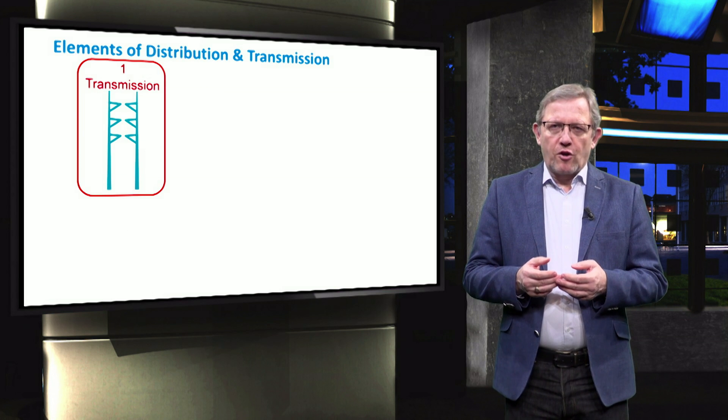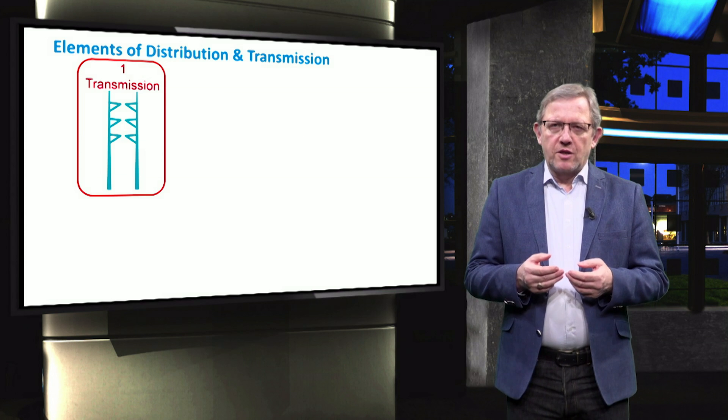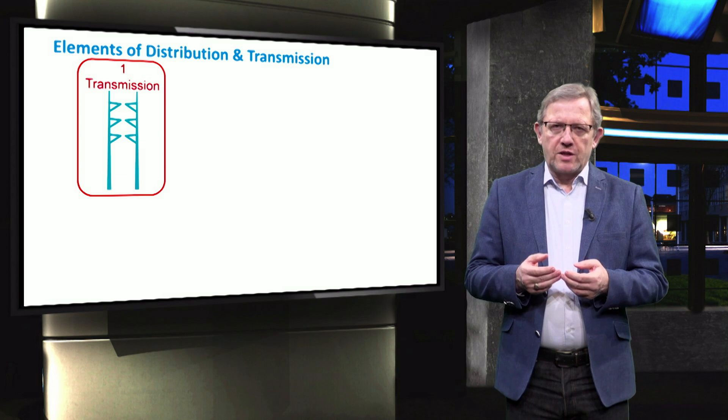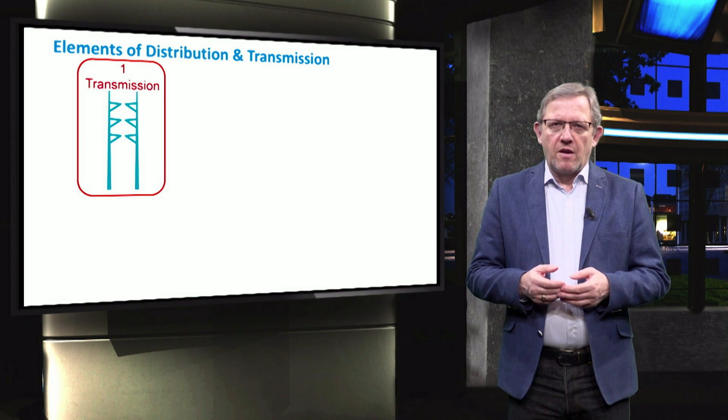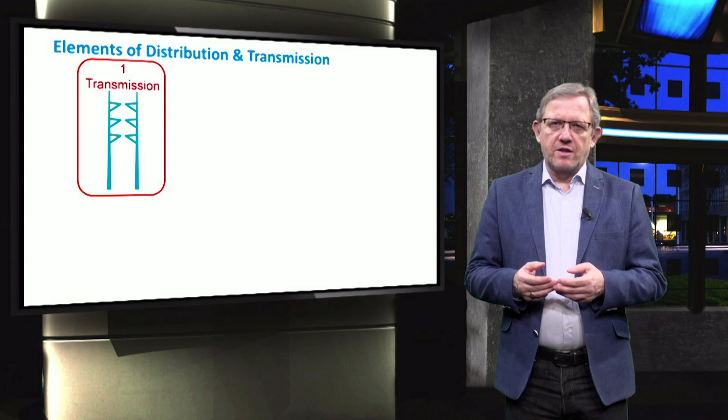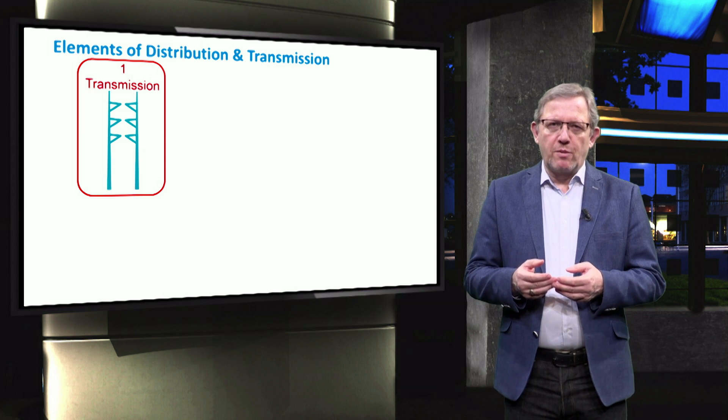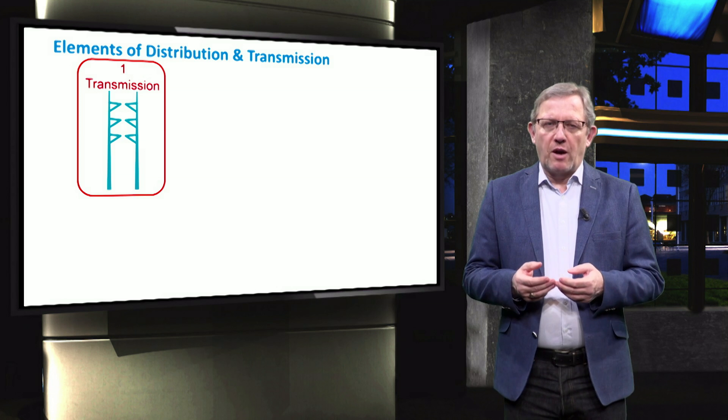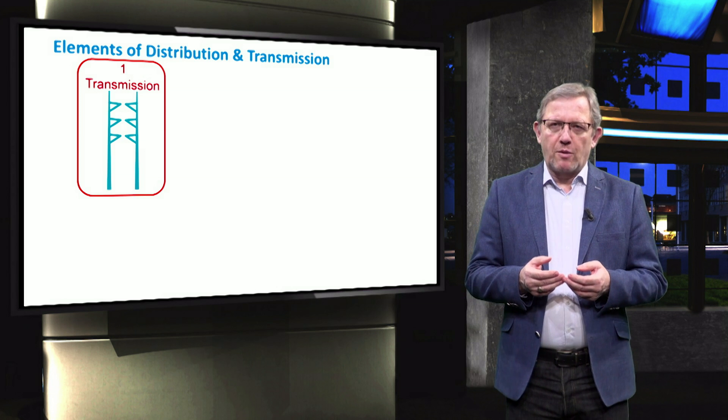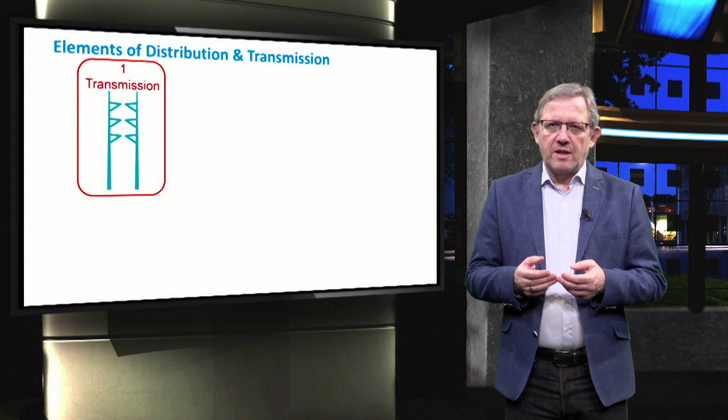Although microgrids are formed at the distribution level, it is good to look at the complete chain of the transmission and distribution. First, at the higher voltage levels, transmission is mainly responsible for transmitting electrical power from large centralized power plants to the demand located at distribution areas.